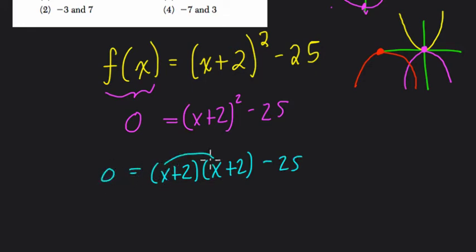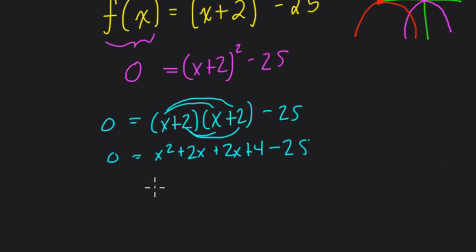If I set this up and distribute, I have x squared plus 2x, plus 2x plus 4. And then minus 25, don't want to lose that. Okay, let's keep going.